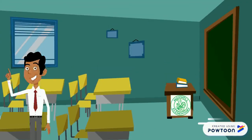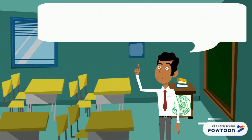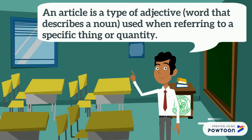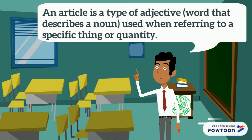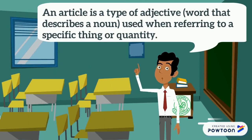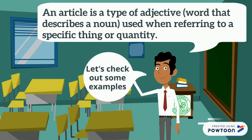An article is a type of adjective, a word that describes a noun, used when referring to a specific thing or quantity. Let's check out some examples.